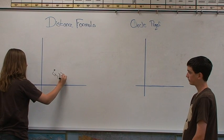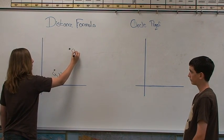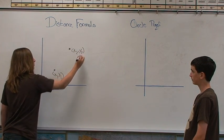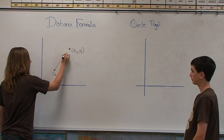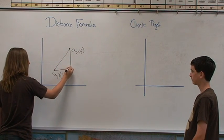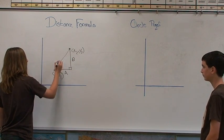Here's our first point, x1, y1. Here's our second point, x2, y2. To do the distance formula, we'll need to draw a right triangle between these two points. Each leg is going to be an A and a B, and then the hypotenuse will be a C.